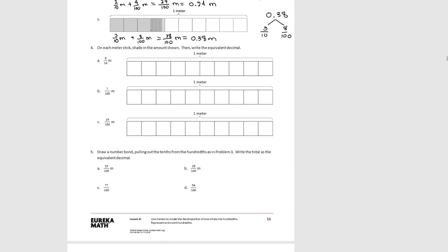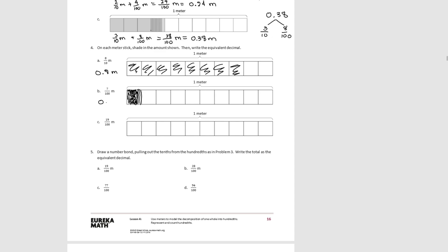For number four, on each meter stick we shade the amount shown and write the equivalent decimal. For Part A, we have eight tenths, so we shade in eight tenths and write eight tenths as a decimal. For Part B, we divide the first tenth into hundredths, shade seven of them and leave three unshaded, and write that in decimal form.